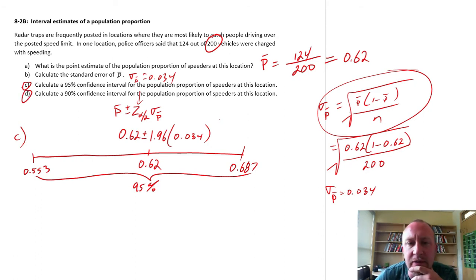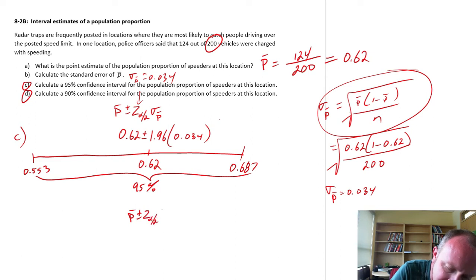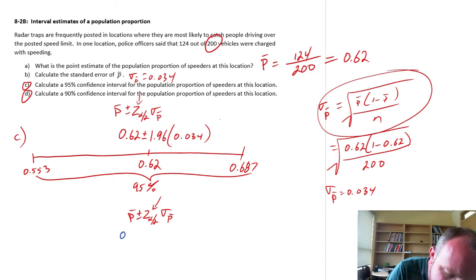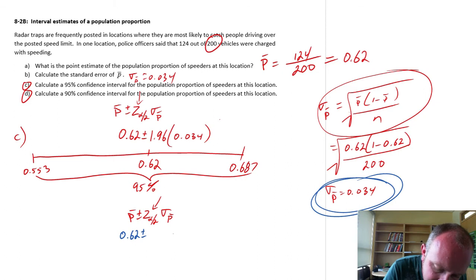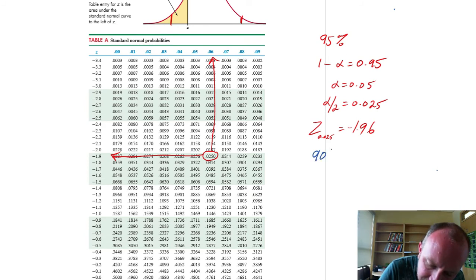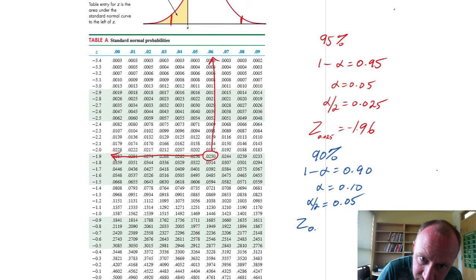Part D, we're looking at 90% confident. So the only thing that changes here is the critical value. The point estimate of the mean does not change, that's still 0.62 plus or minus. The standard error doesn't change because that's dependent on the sample we've collected, so that's still 0.034. But now we need to figure out what is that new critical value for this test. If we're reproducing a 90% interval, 1 minus alpha is 0.9, so alpha is 0.1, and alpha divided by 2 is 0.05.